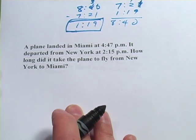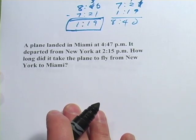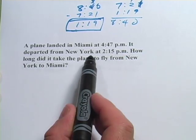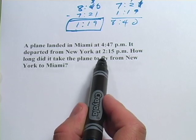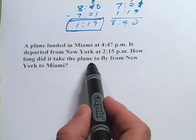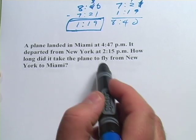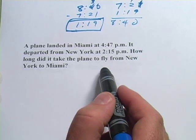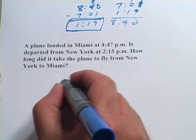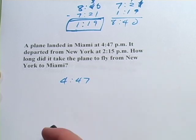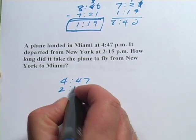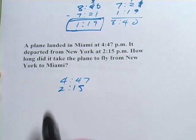All right, one more. It says: a plane landed in Miami at 4:47 p.m. It departed from New York at 2:15 p.m. How long did it take the plane to fly from New York to Miami? This is an elapsed time problem. Again, we're going to subtract. It arrived at 4:47, it started at 2:15, so we subtract to find the amount of time in between.